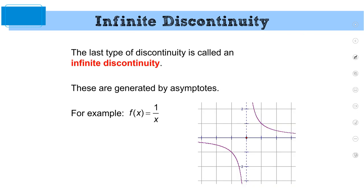Number three: infinite discontinuity — also known as a vertical asymptote. Which of the three parts does this violate? Number one — it's not fully defined. But also number two — the limit doesn't exist. This one's the grand slam: all three are violated. It's not defined, there's no limit, and the limit and the value aren't the same.